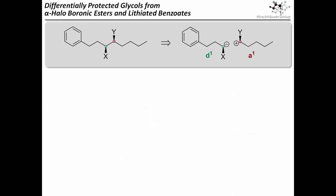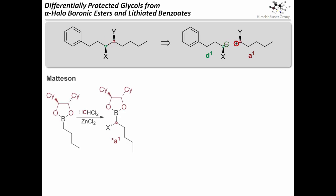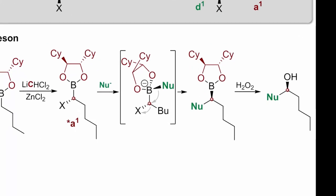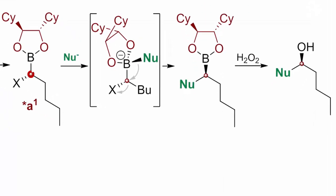Let's pretend we just heard about retrosynthesis and the disconnection approach and apply it to this problem. If we cut between the two highlighted carbon atoms, we get a chiral D1 and a chiral A1 synthon. The Matteson homologation delivers a chiral alpha-haloboronic ester, which can be reacted with a donor nucleophile and after oxidation you get an alcohol. So these alpha-haloboronic esters can be considered chiral A1 reagents.